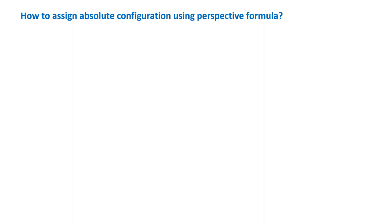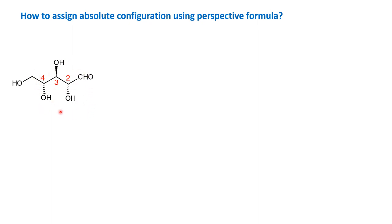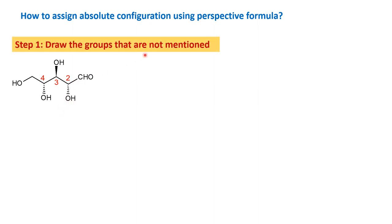Now let us see how to assign absolute configuration using a perspective formula. When a Fischer projection is given, it is quite easy to assign configuration. But students find it difficult when a perspective formula is given. In this particular structure, we see only three bonds are shown; the fourth bond is not shown. So whenever a molecule is given like this, the first step is to draw the fourth group — the groups that are not mentioned — so that we are clear about the assignment.